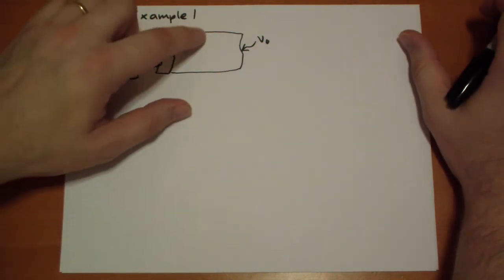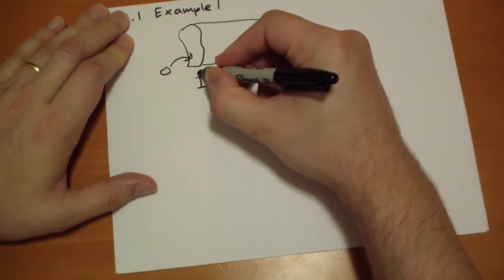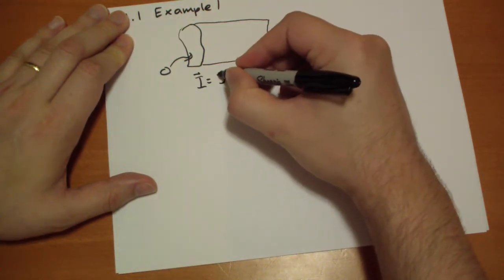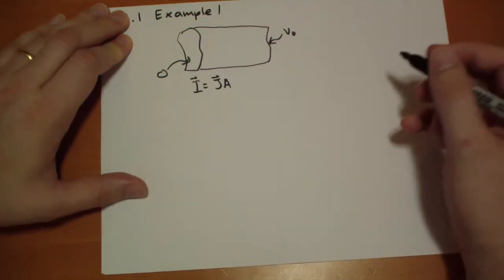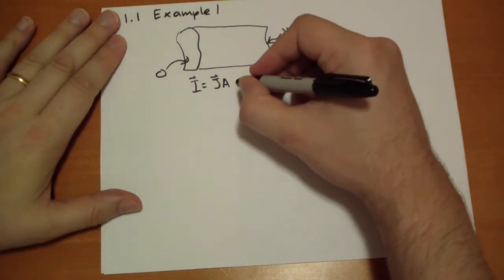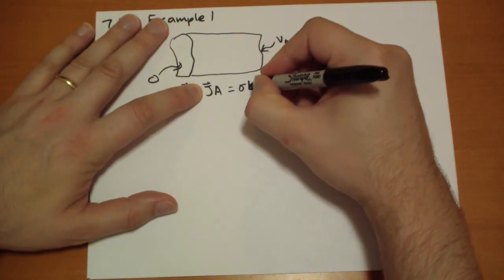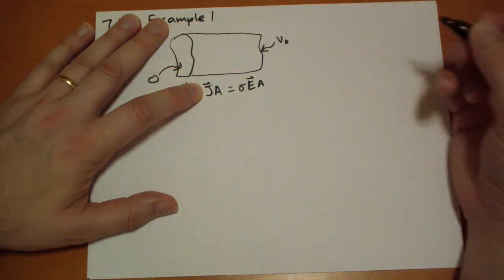So the current is going to be the current density times the area. So I is going to be the current density times the area, the cross-sectional area. And that's going to be equal to sigma times electric field. This is Ohm's Law. So we get sigma times electric field times the cross-sectional area.